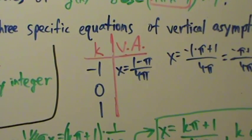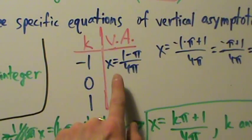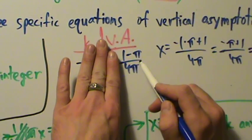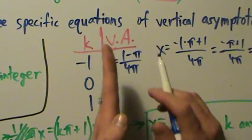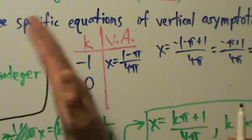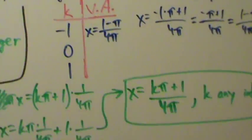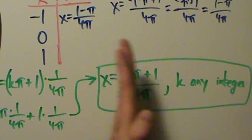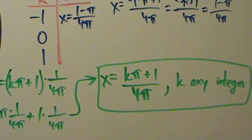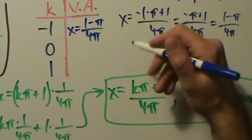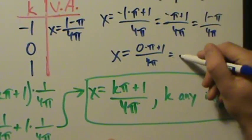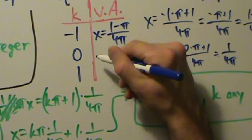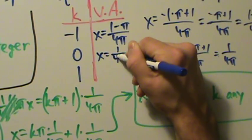Remember, your answer must be the equation of a vertical asymptote - it's not enough to just write the expression. You have to say x equals the expression, because a vertical asymptote is a vertical line and must have the form x = something. This applies to both the general equation and each specific equation.